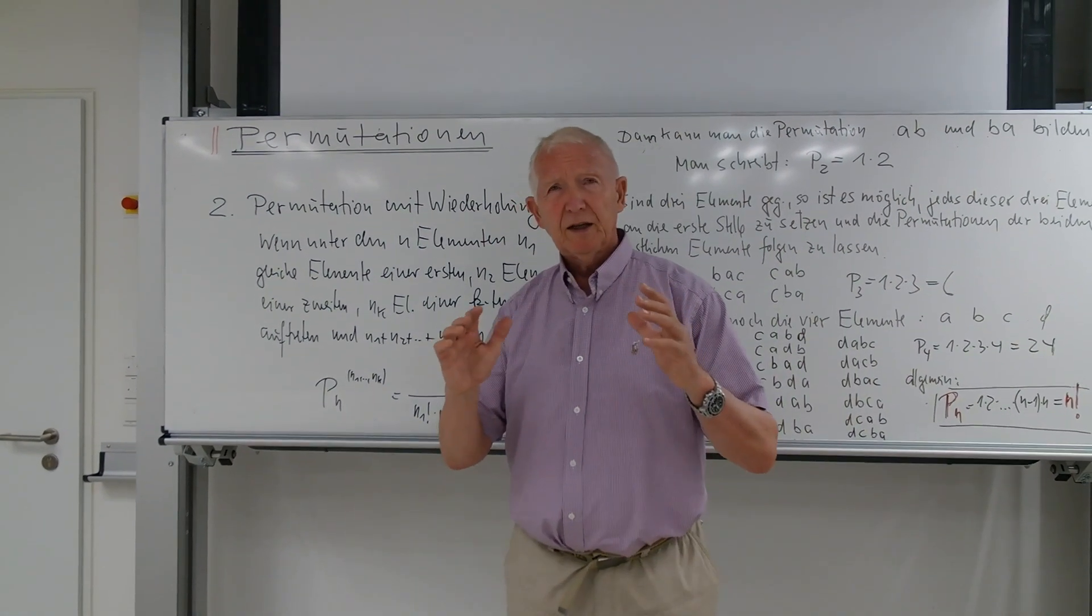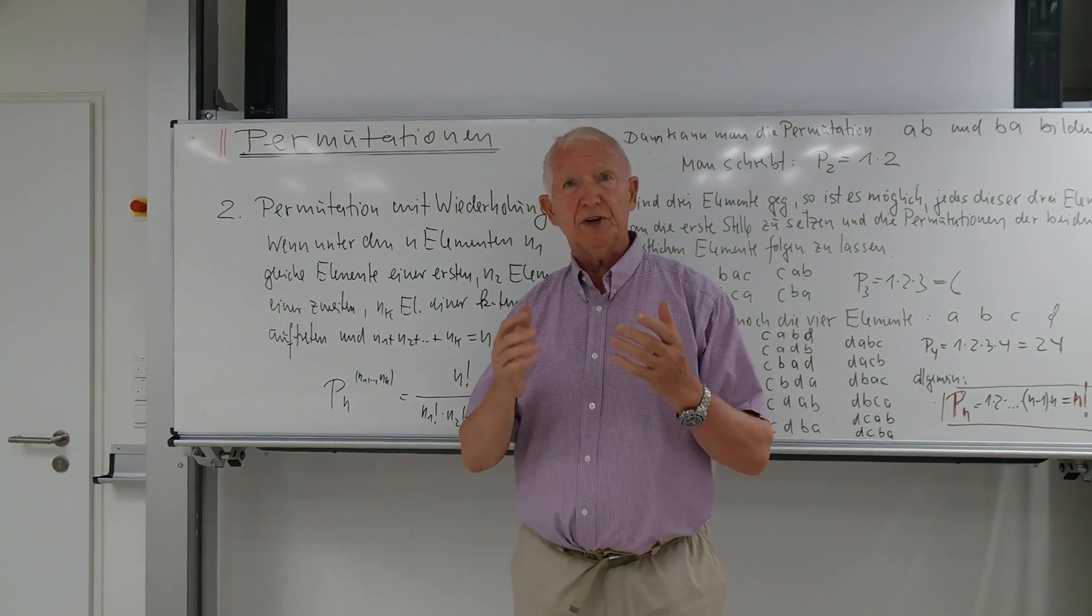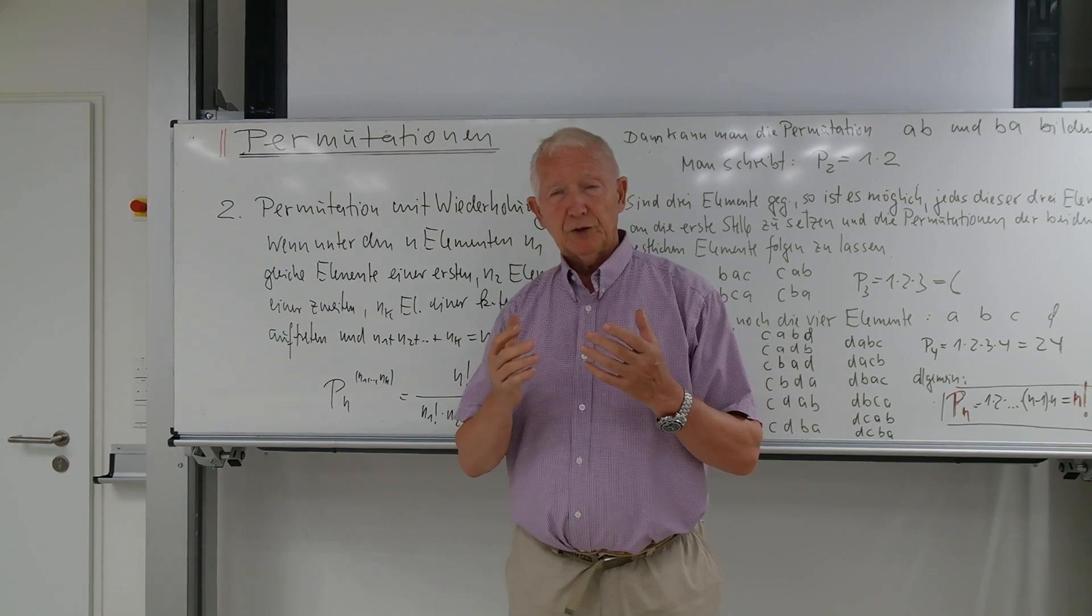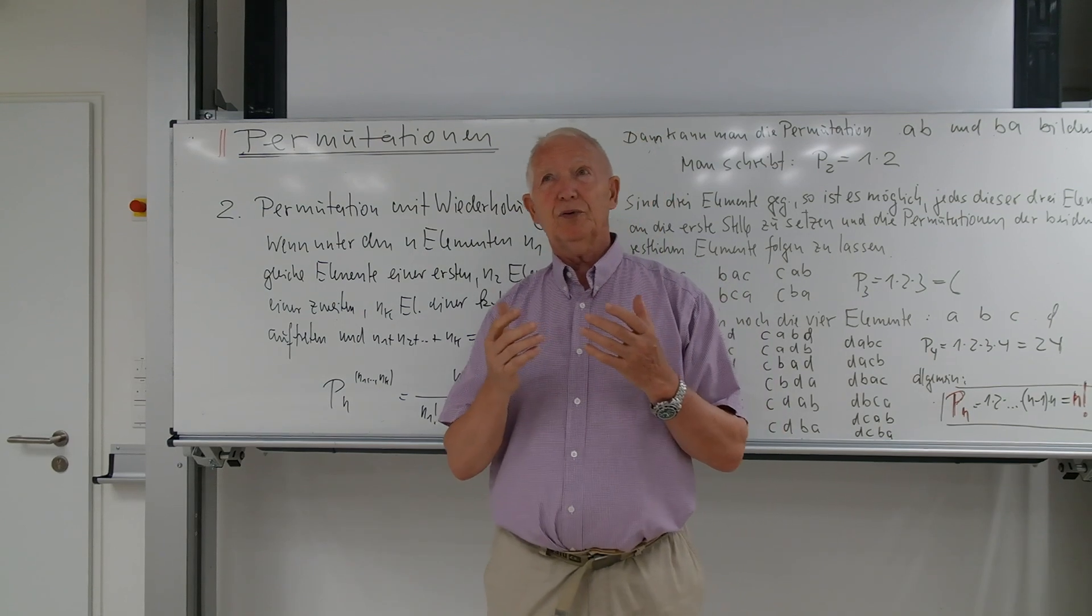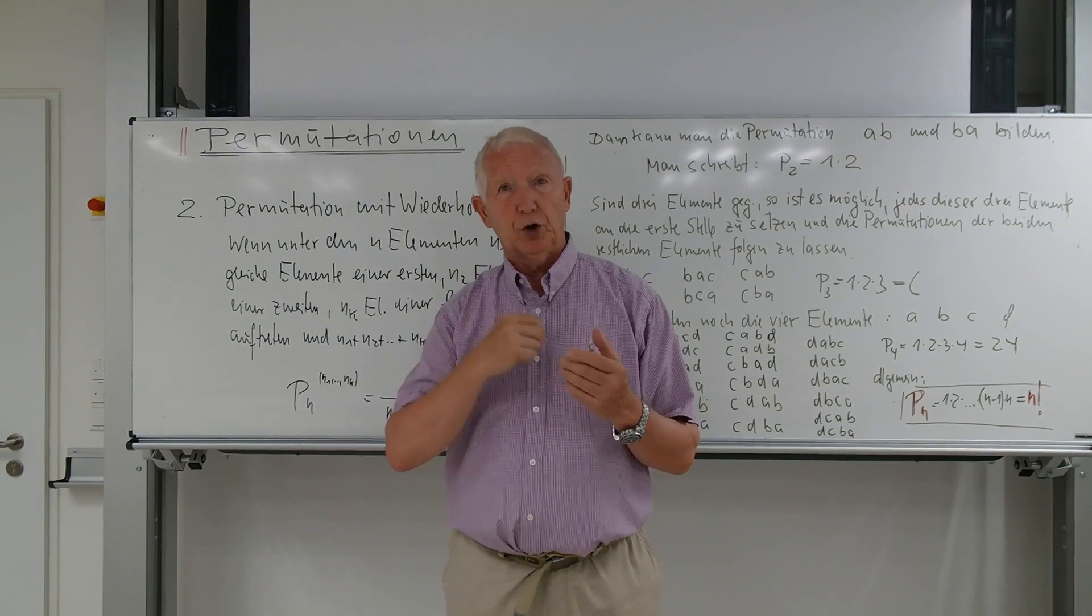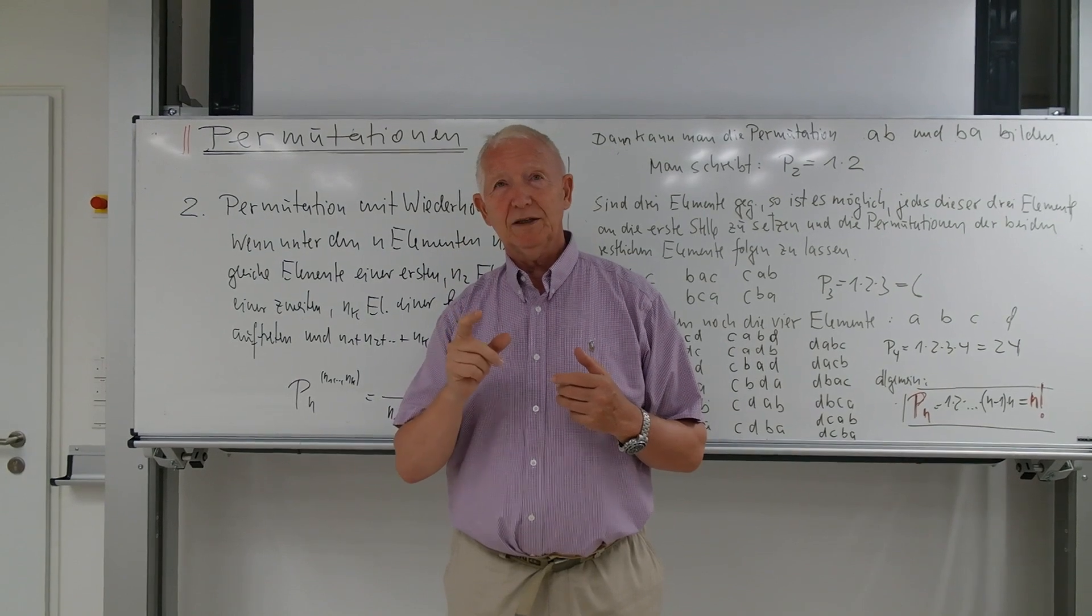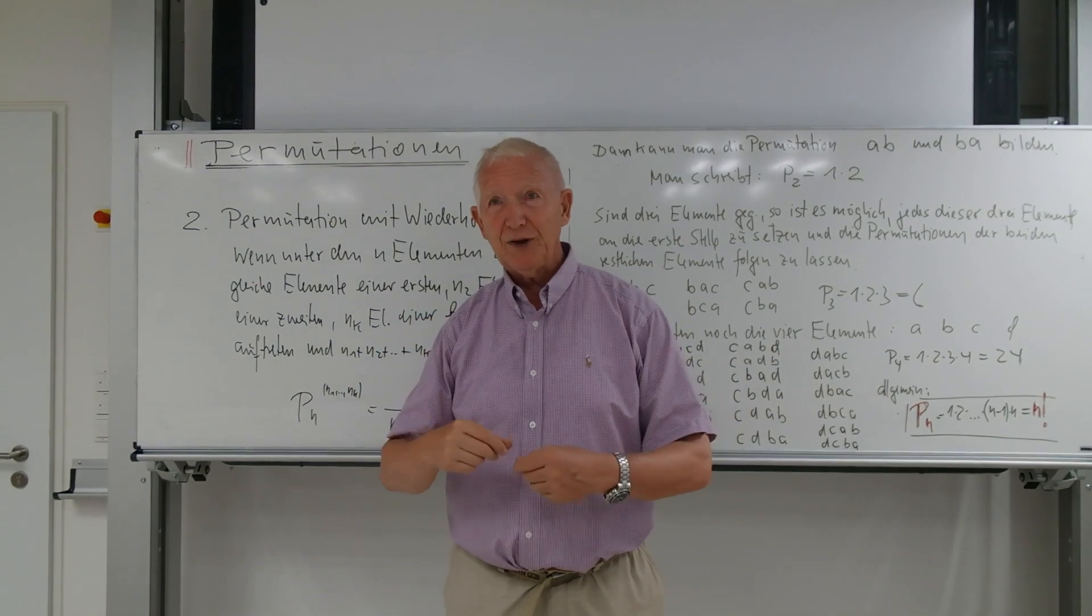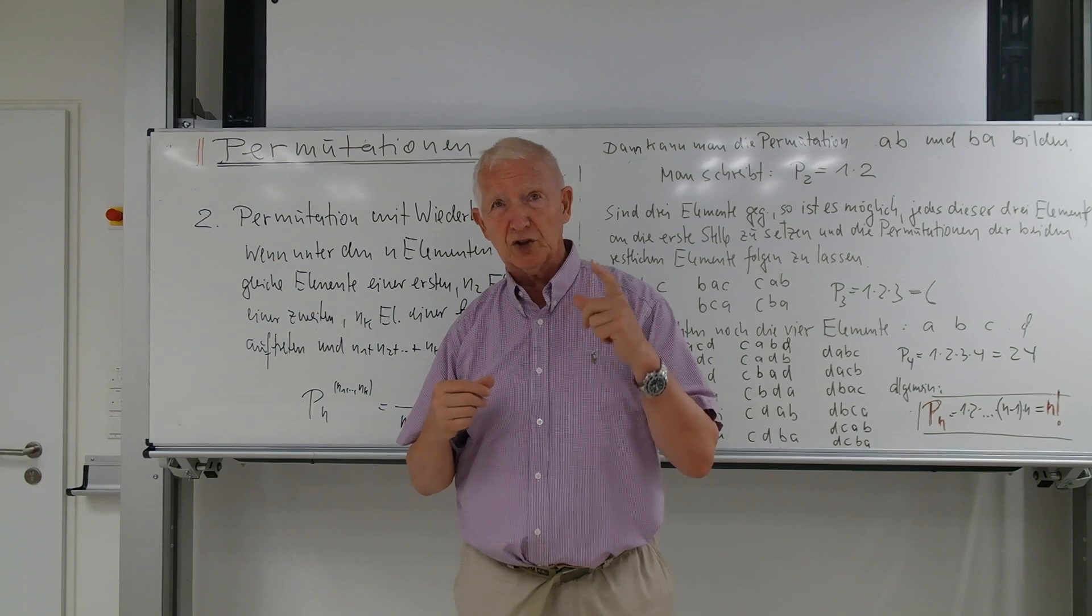Nehmen wir mal an, wir haben eine Halskette. Diese Halskette hat 10 verschiedene, farblich verschiedene Perlen. Jetzt haben wir eine Schulklasse und die Mädels wollen jeweils eine andere Farbkette in der Anordnung haben. Dann gibt es bei diesen 10 Elementen 10 Fakultät verschiedene Möglichkeiten, eine Farbkette zu tragen. 10 Fakultät ist schon ein Riesenwert, den wir mit dem Taschenrechner ausrechnen können.